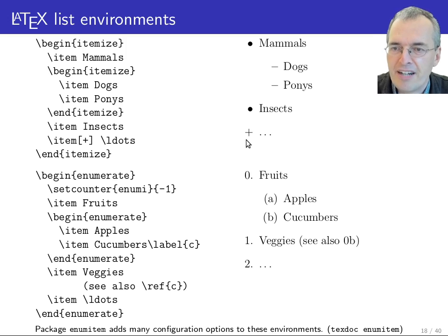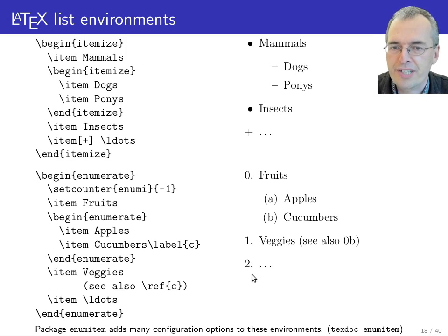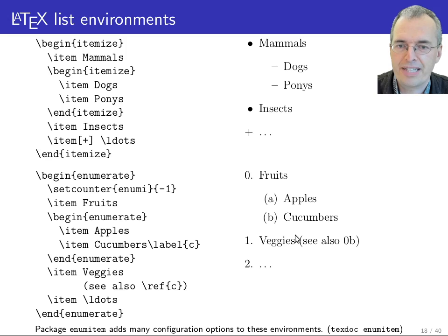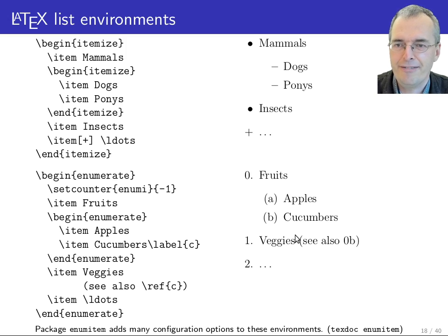The enumerate environment works the same way but gives you an ordered list where a counter increments for each item. Again, you can nest these and LaTeX will automatically use a different enumeration style at each level of indentation.